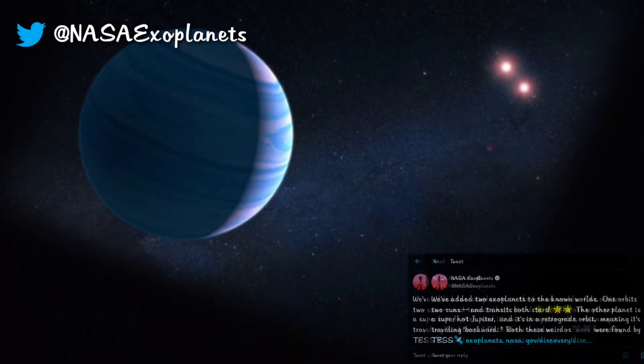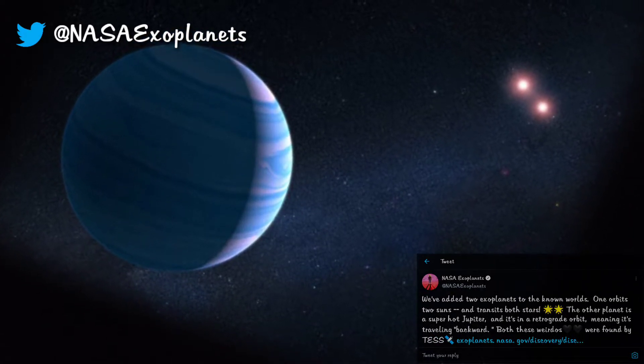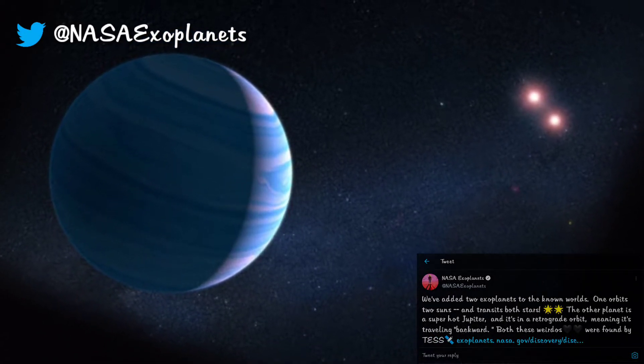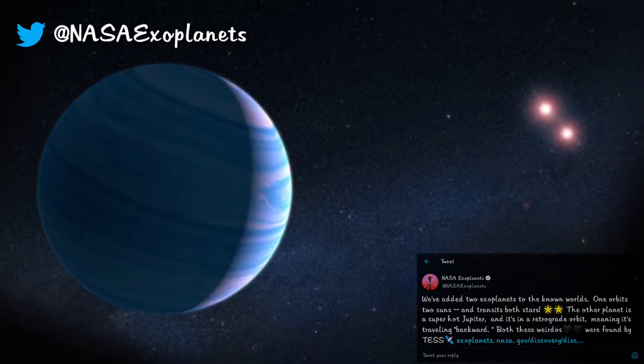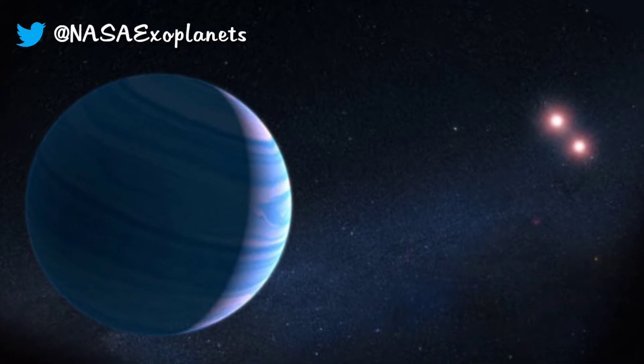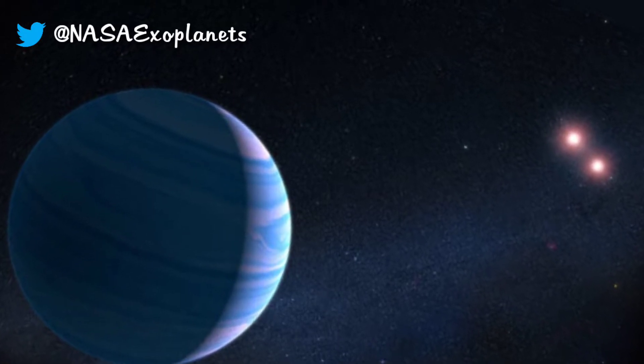Last week alone, NASA added two new exoplanets to their long list. One orbits two suns, while the other planet, a super-hot Jupiter, is in close retrograde orbit around its host star. Both these weirdos were found from data collected by TESS.